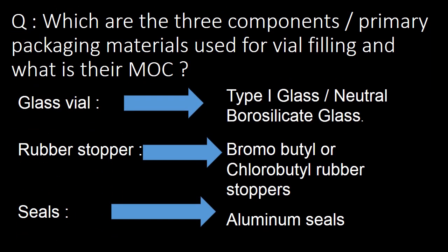Next basic and important question: which are the three components or primary packing materials used for vial filling and what is their MOC? There are three components that come into direct contact with the product: glass vials made of Type 1 glass or neutral borosilicate glass; rubber stoppers, mainly bromobutyl or chlorobutyl; and seals made of aluminium.